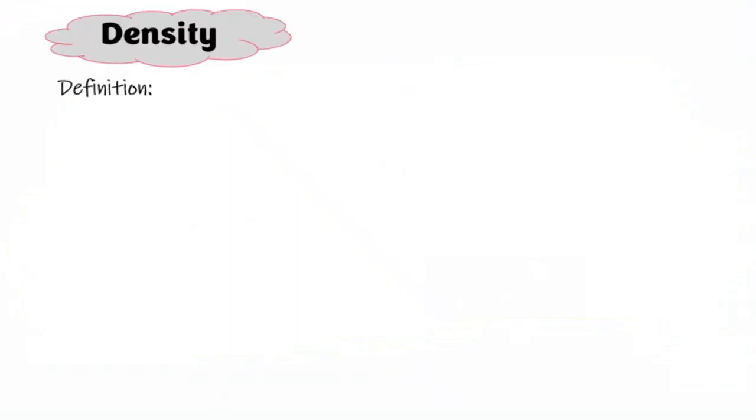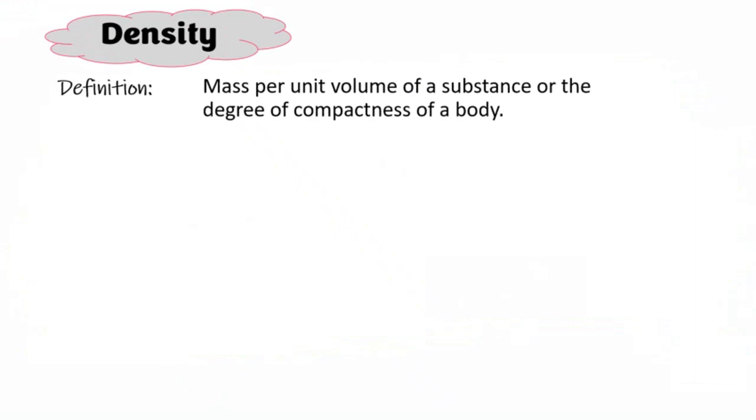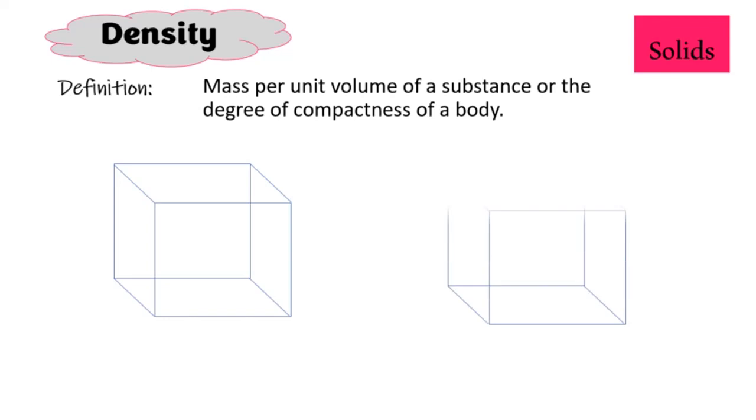Let's look at a definition of density. It is the mass per unit volume of a substance, or the degree of compactness of a body. Let's now explore what exactly that means. We're starting off with solids, so we have two boxes here on screen. They look like the same volume, so what we're going to be doing is basically comparing to see which is more dense than the other based on the contents that it has.